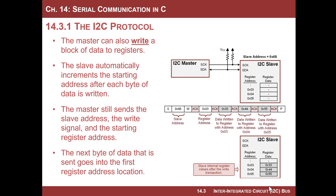After those three bytes, values 33, 44, and 55 are written into registers 3, 4, and 5 respectively. The slave is prepared to receive another byte, having incremented its internal register address counter to 6. It will continue doing this indefinitely until the master sends a stop bit.